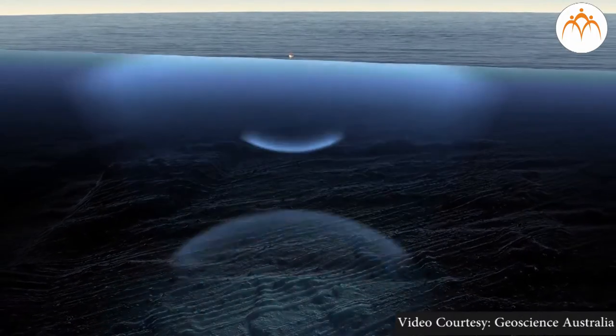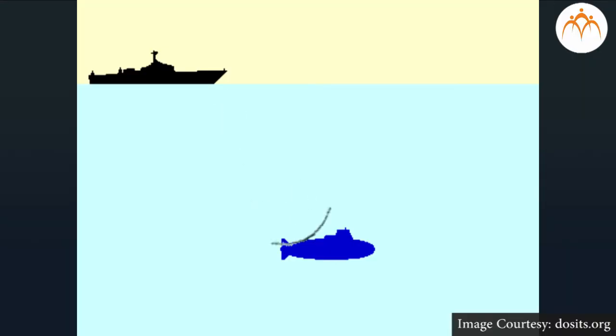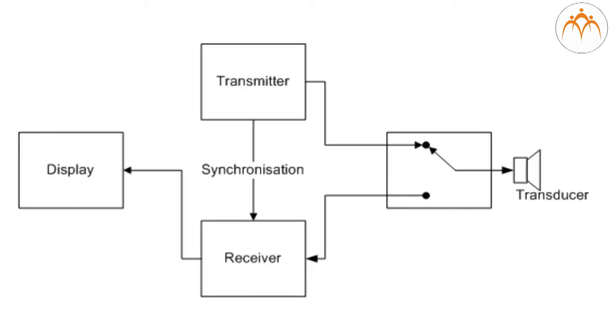Active sonar emits sound signals and receives these as well to determine the orientation and range of objects. Passive sonar does not emit sound signals. It only listens to the sound waves coming towards it. It is primarily used to detect noise from marine objects like submarines and marine animals like whales. Sonar consists of transmitter, transducer, receiver and display.